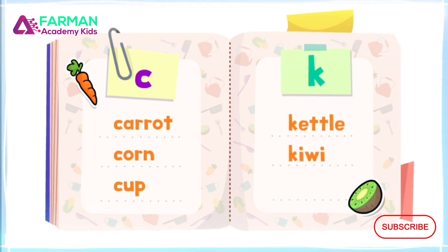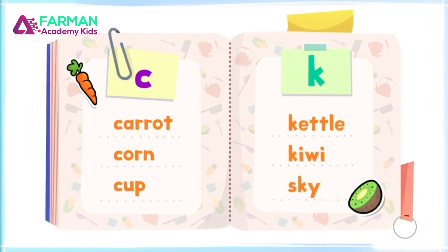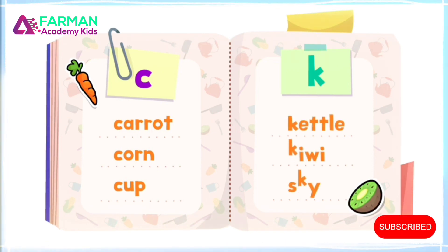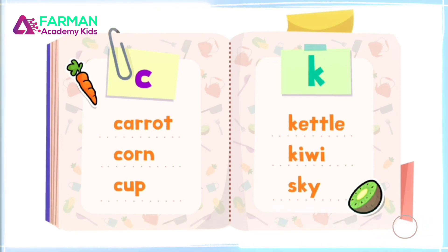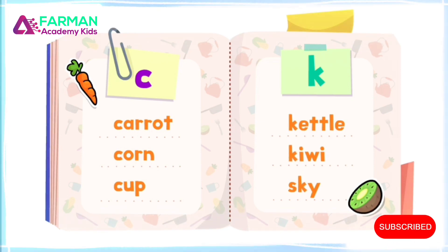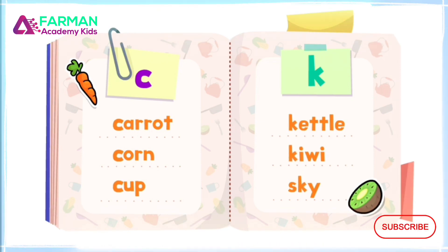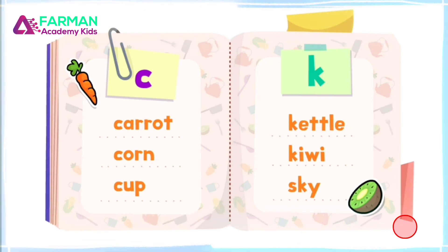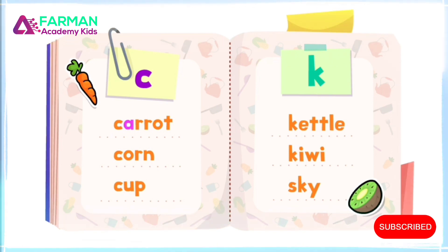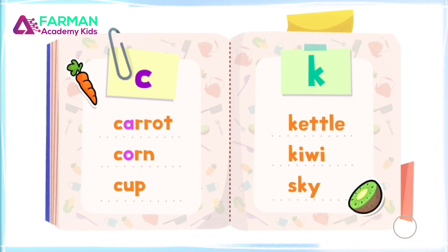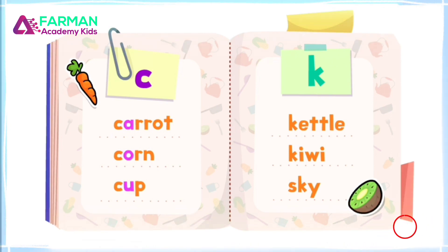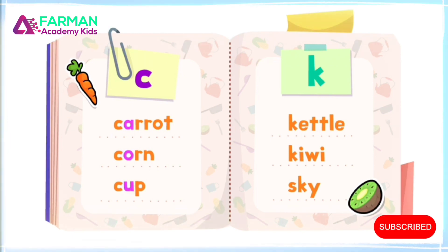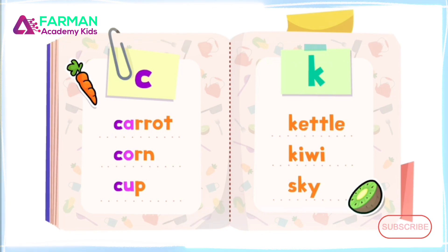Kettle, kiwi, and sky all use the letter K to make the K sound. If the K sound is followed by an A, O, or U, use the letter C.